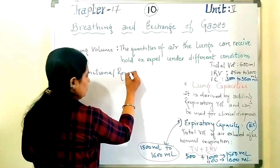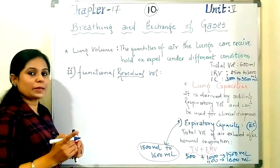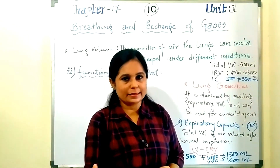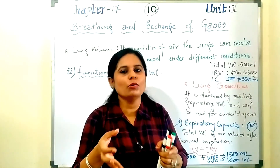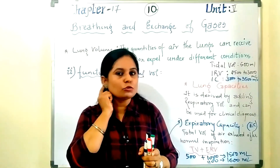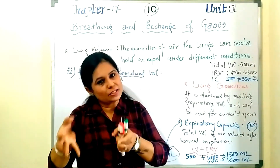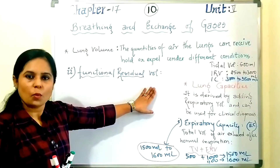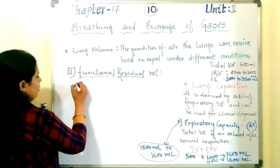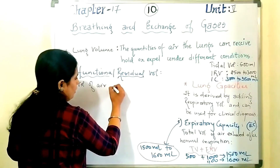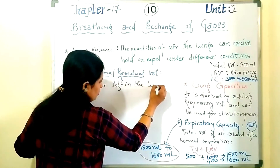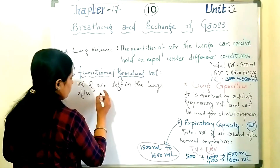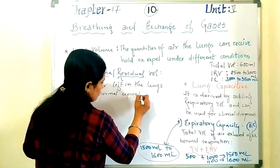Next is functional residual capacity (FRC). 'Residual' means the air left behind, and 'functional' refers to the air that is used for exchange of gases. When you exhale normally — just 500 ml tidal volume — there is still a remaining amount of air in your lungs, and that amount is useful for the exchange of gases. Because it is saved and functional for gas exchange, it is called functional residual capacity. It is the volume of air left in the lungs after normal expiration.